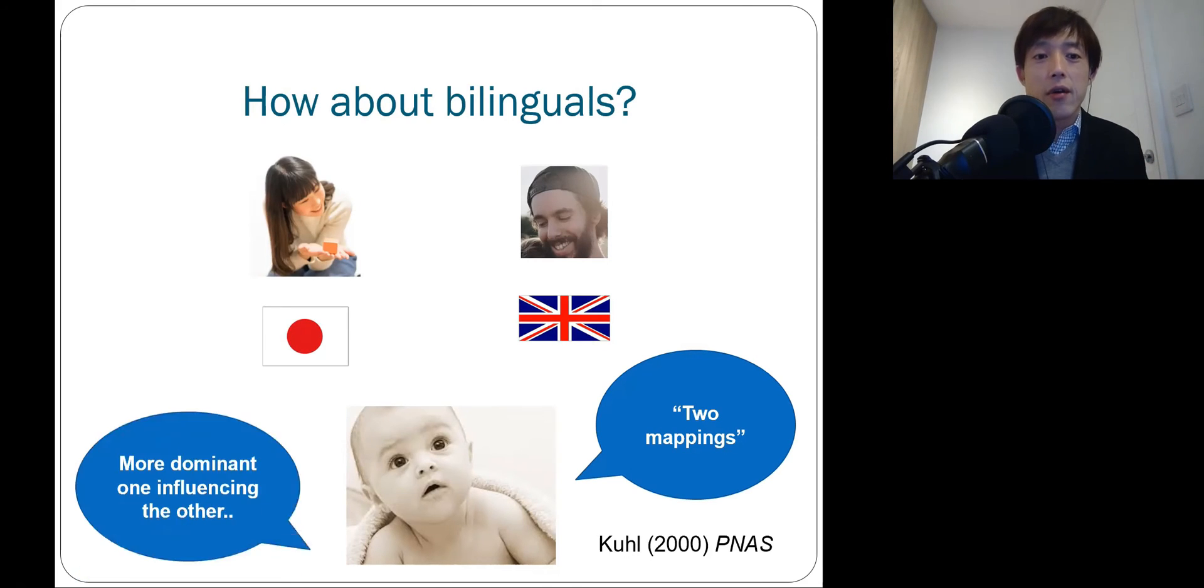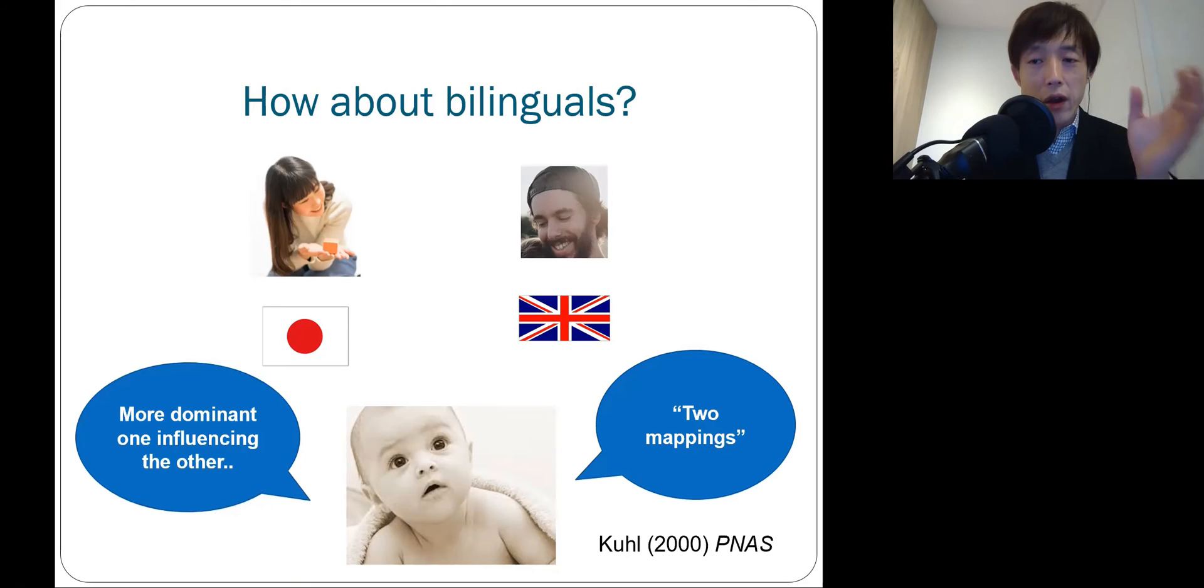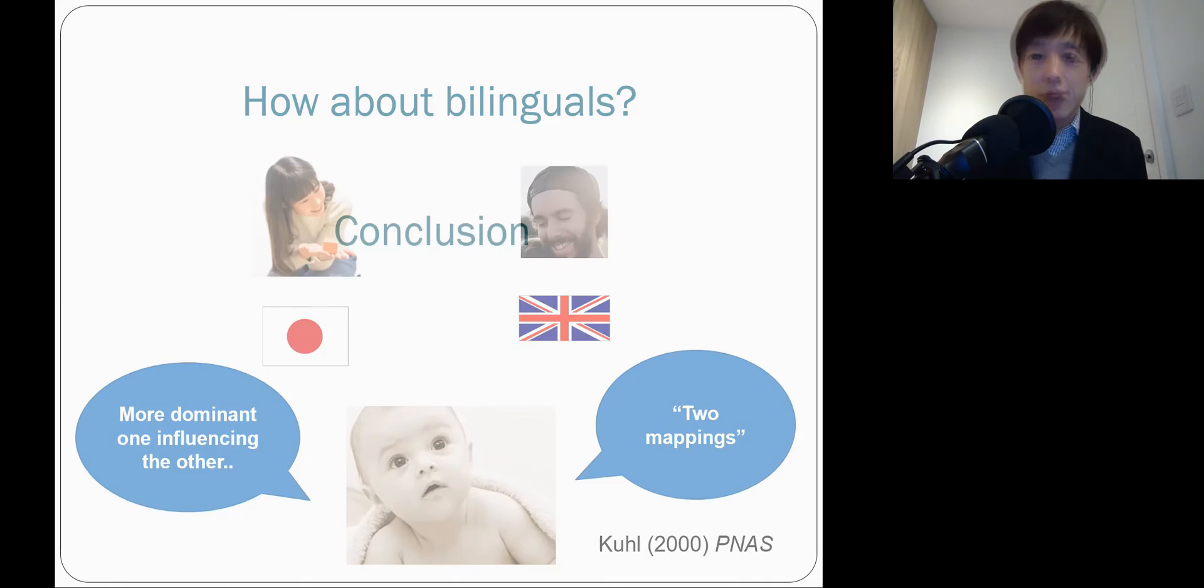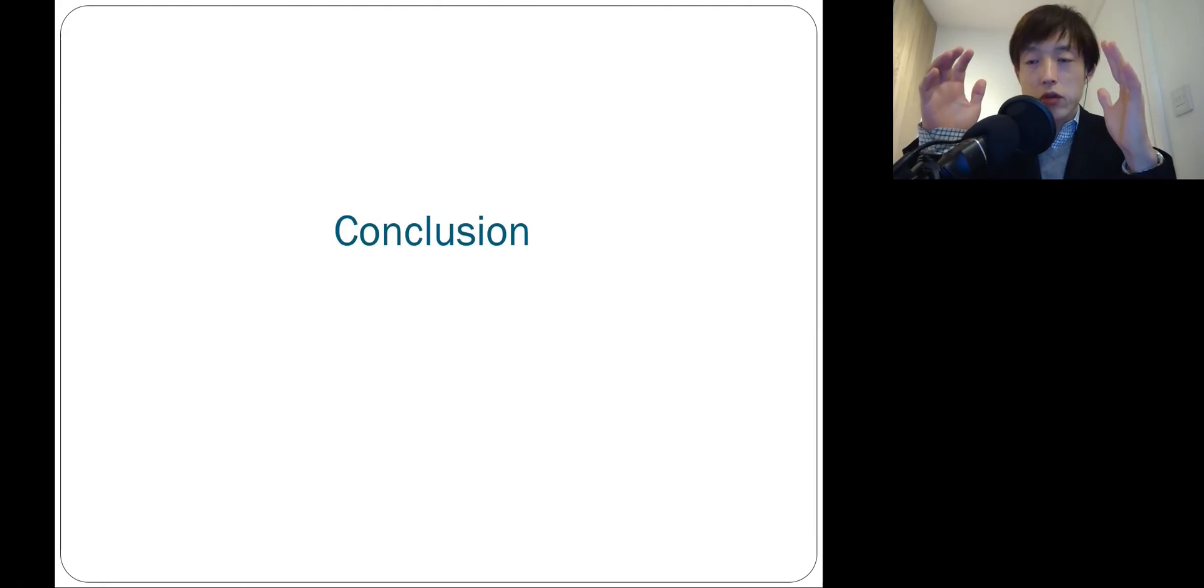But it's more likely that one language may win over the other. So in the end, kids' phonetic system will probably be influenced more by the dominant language than less dominant language. But in the end, this end of the critical period or duration of the critical period is actually quite flexible depending on their linguistic environment.